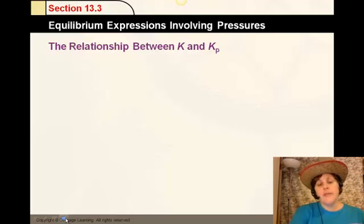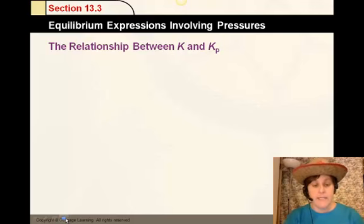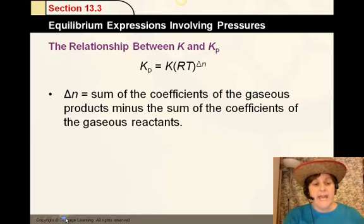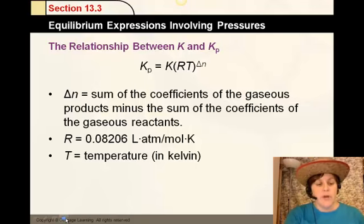How do we go between K and Kp? If you're given concentration, you just do products over reactants. Or if you know the pressure, the Kp, you can get the K using this formula right here, which you can find in your cheat sheet. Kp equals K times RT to the delta N. Delta N is the sum of the coefficients of the gaseous products minus the sum of the coefficients of the gaseous reactants. R is 0.0821, and temperature is in Kelvin.